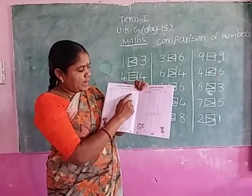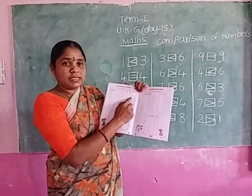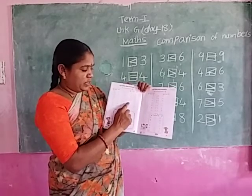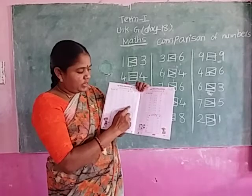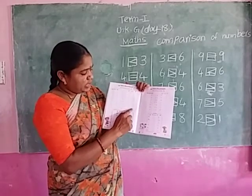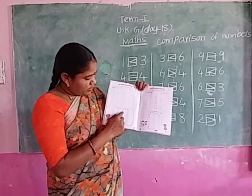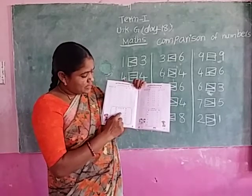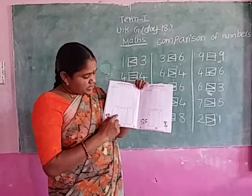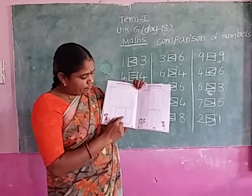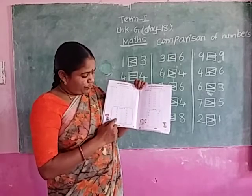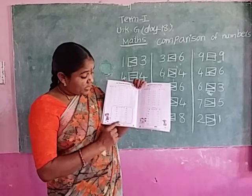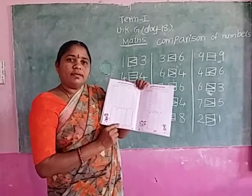After numbers: after 8 is 9, after 6 is 7, after 11 is 12, after 14 is 15, after 3 is 4, after 15 is 16, after 17 is 18. Between numbers: 10 and 12 between is 11, 14 and 16 between is 15, 6 and 8 between is 7, 3 and 5 between is 4, 15 and 17 between is 16, 18 and 20 between is 19.